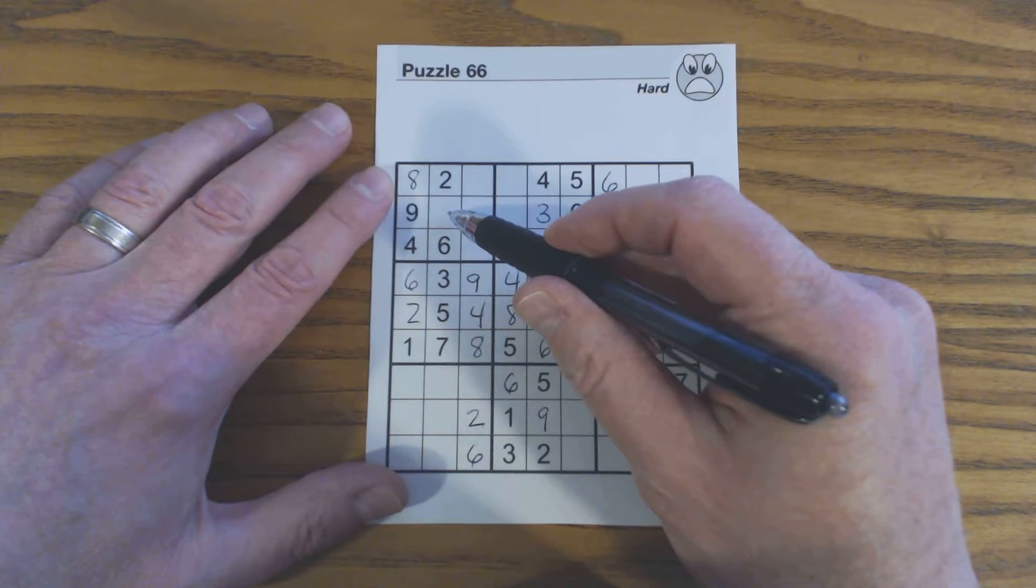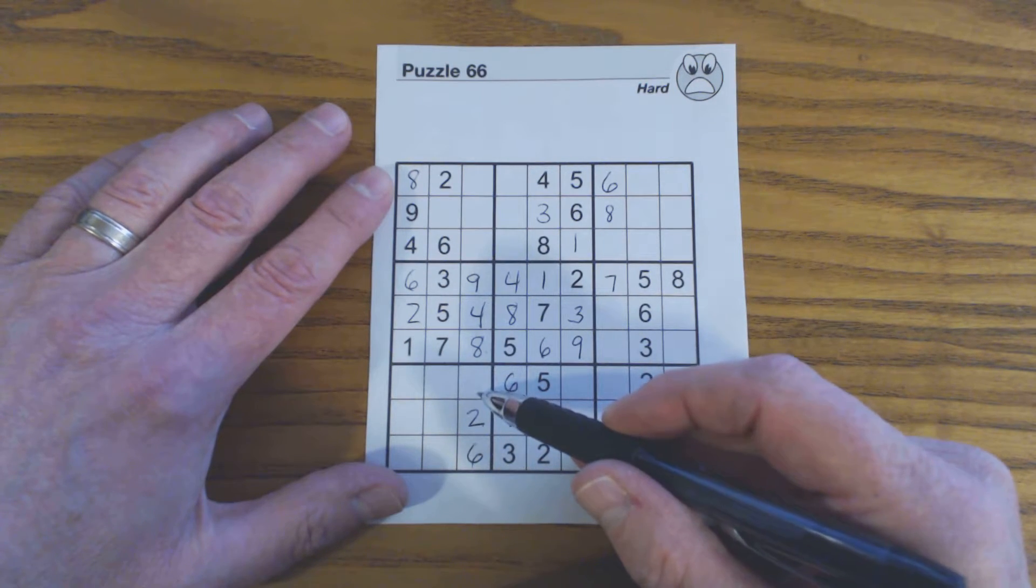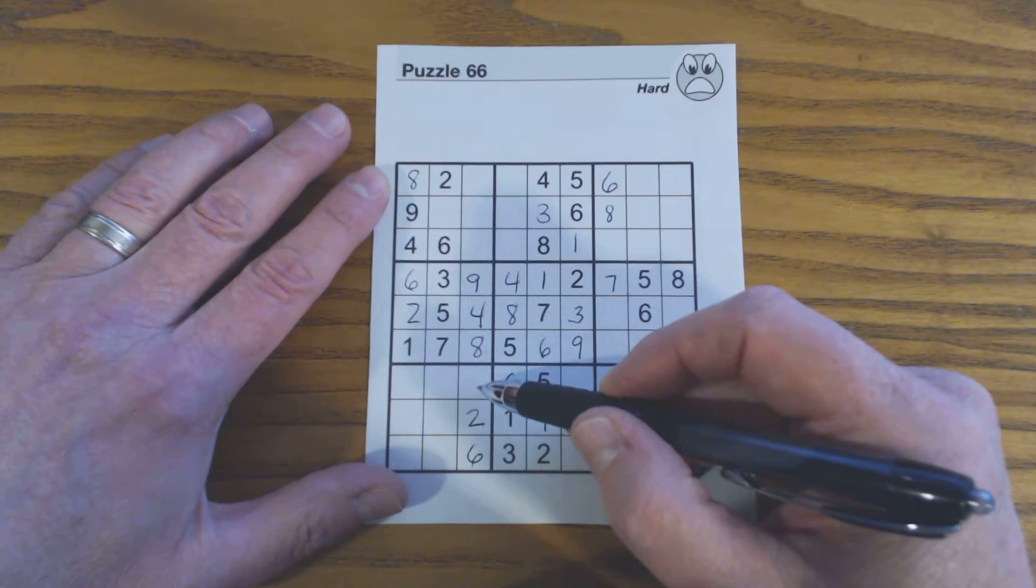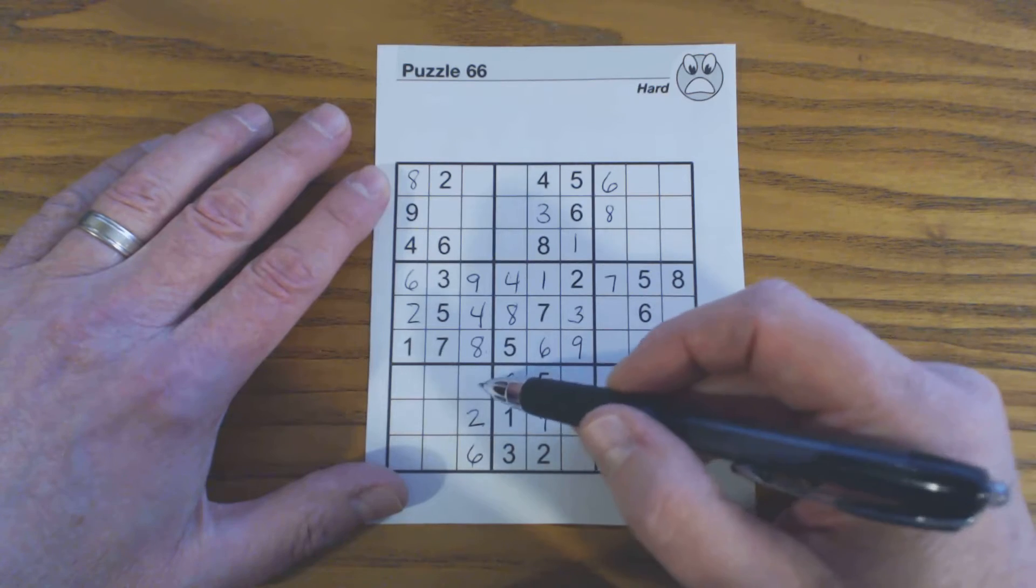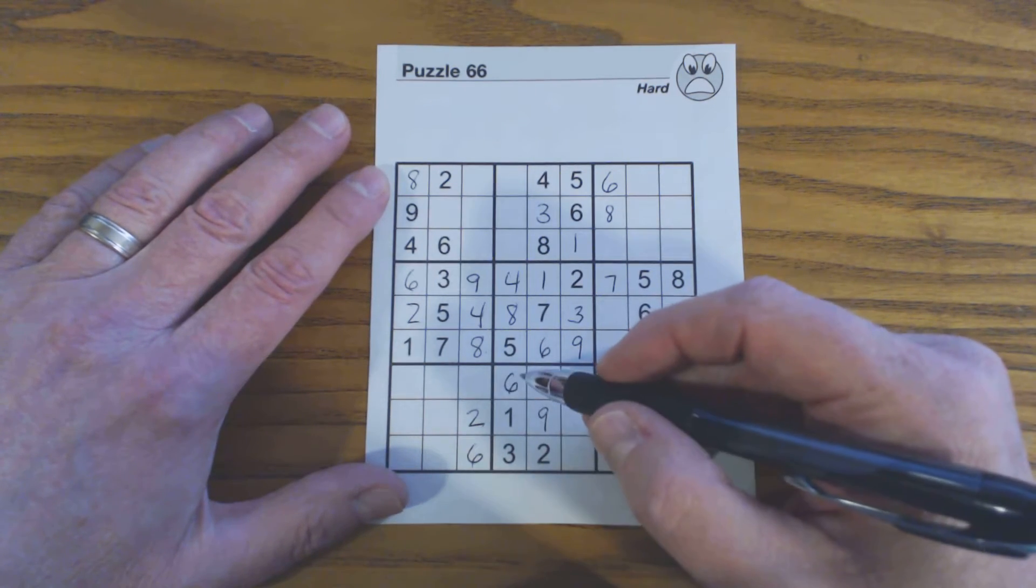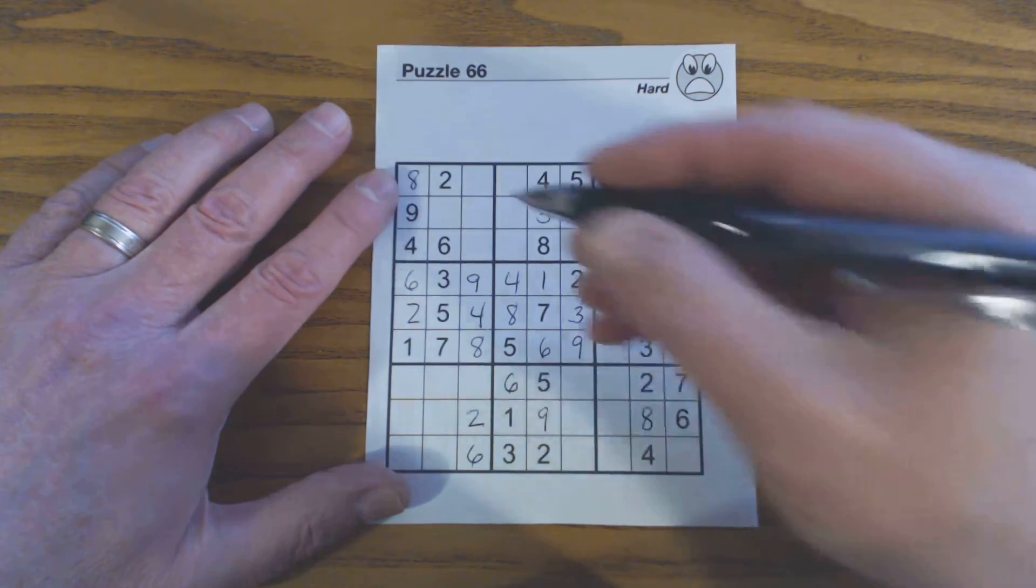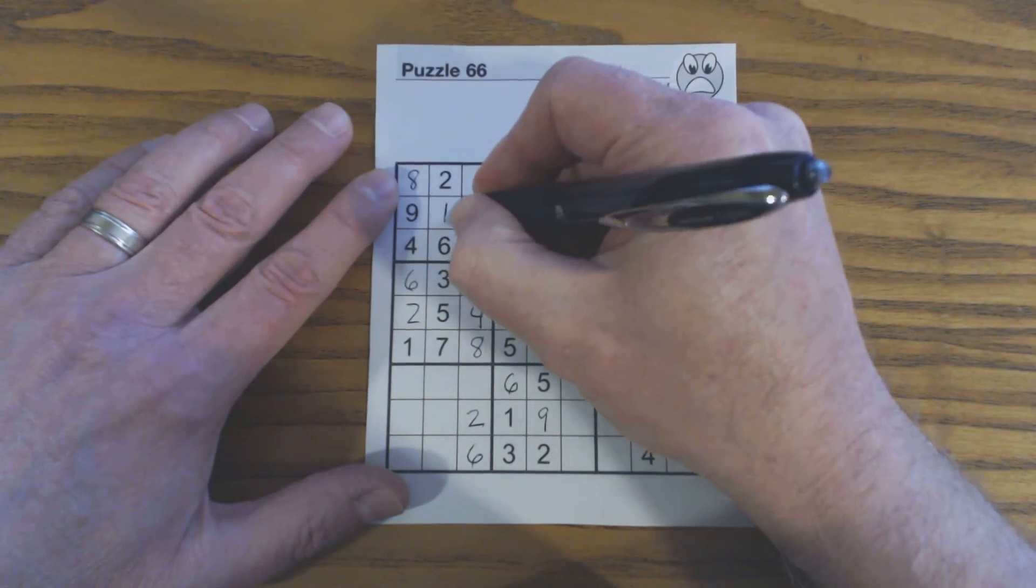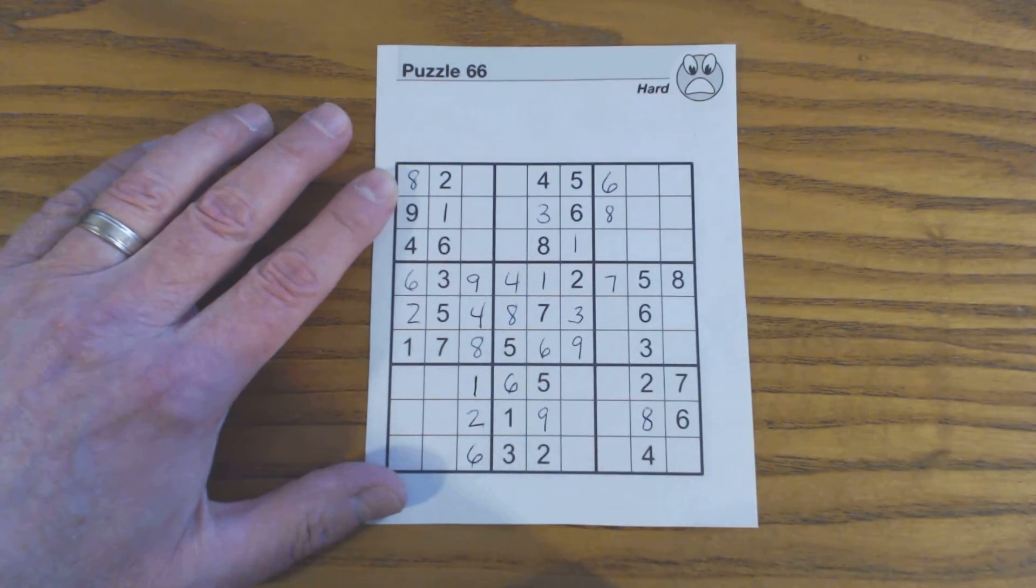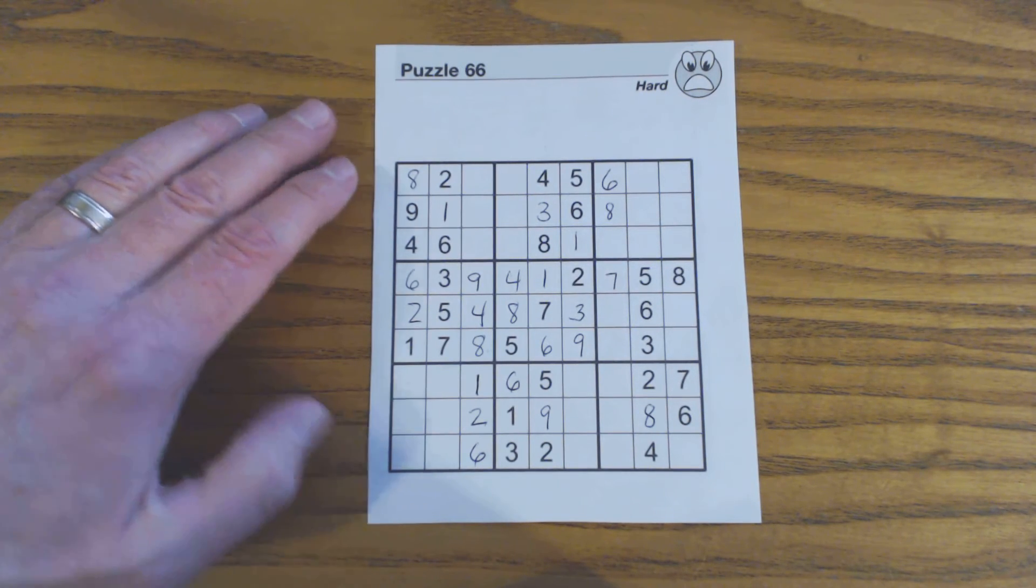Since this can't be a 3, this can't be a 3 because they're identical twins, so therefore we know that there's a 1 here and a 1 here. That's kind of unique for identical twins, but it's a good way to find numbers that you can't otherwise find. So we'll fill those numbers in, a 1 there and a 1 there, because we found them using loner cells and identical twins.